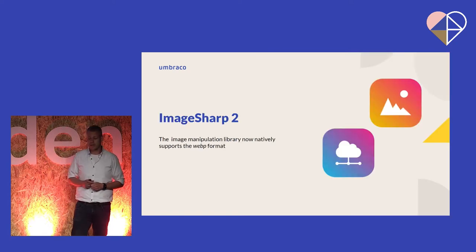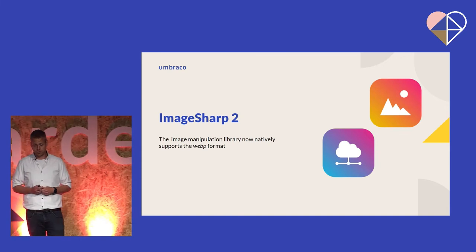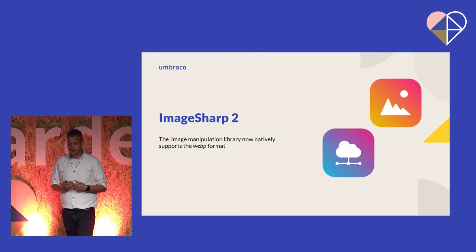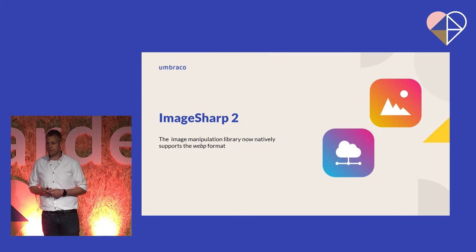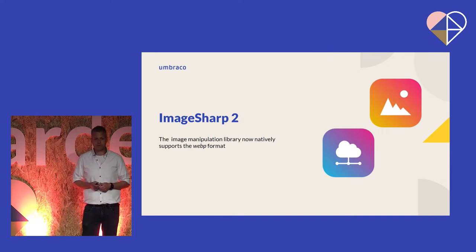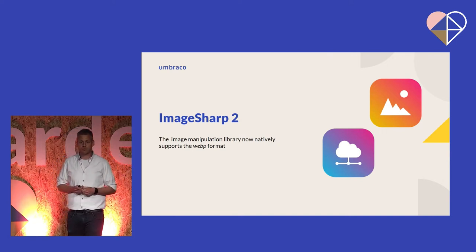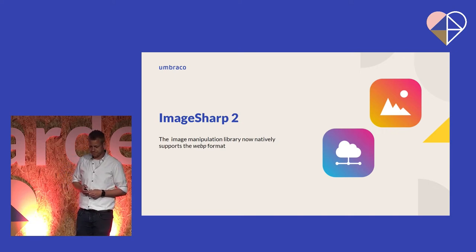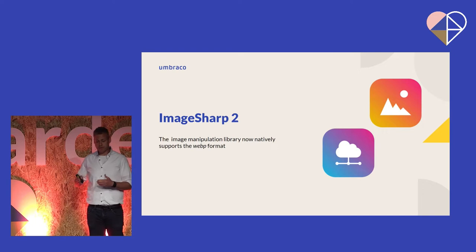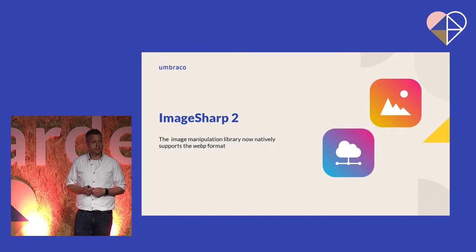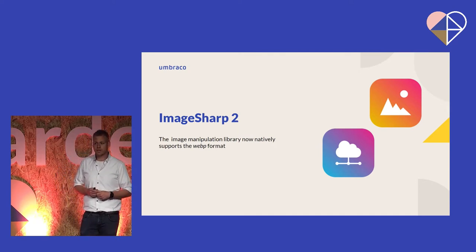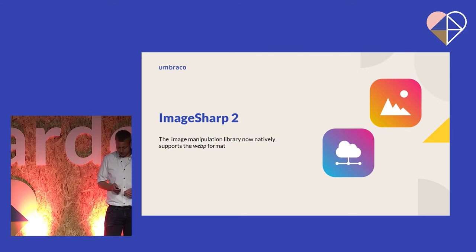We also updated our dependency to ImageSharp version 2. ImageSharp is the library we use for image manipulations like scaling, cropping, and reading image data from different file formats. The new big feature in ImageSharp 2.0 is native support for WebP, which I know a lot of you have requested due to recommendations from Google Lighthouse analysis. But be aware, this is a major version change, so there are also breaking changes here if you use ImageSharp's API directly from your solution. If you just use it through Umbraco, of course, we handle all the breaking changes for you.